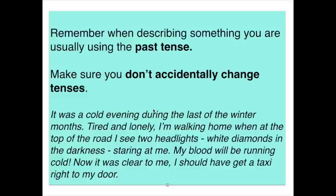A good point to remember is to usually use the past tense when describing. Make sure your tenses don't accidentally change in your writing unless the change is intentional. Here is an example of a description where the tenses are all over the place: 'It was a cold evening during the last of the winter months. Tired and lonely, I'm walking home when at the top of the road I see two headlights, white diamonds in the darkness, staring at me. My blood will be running cold. Now it was clear to me I should have got a taxi right to my door.' That playing around with tenses completely destroys the atmosphere and confuses the reader.